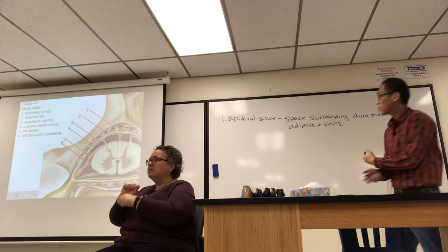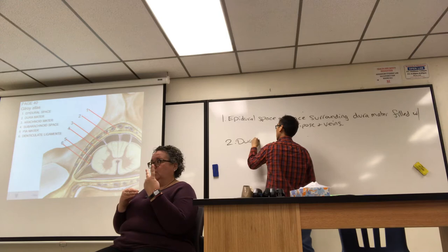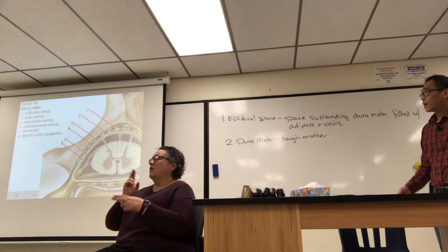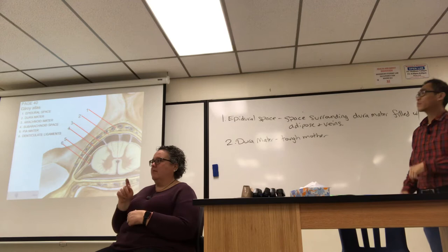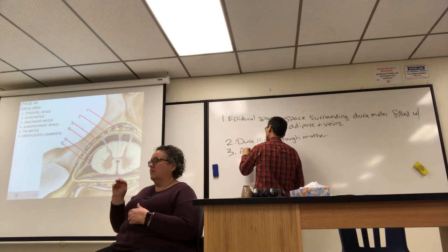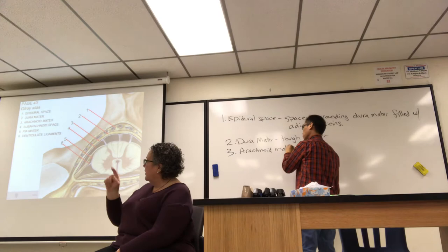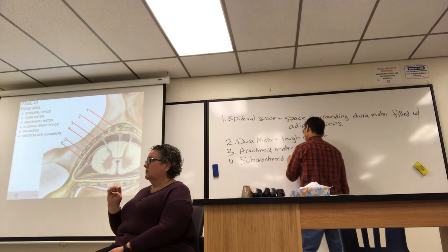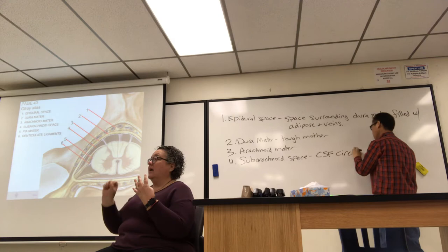Number two is the dura mater itself — the 'tough mother' — the thickest of the membranes. Right beneath that is the arachnoid mater, number three. Below that is the subarachnoid space, number four.